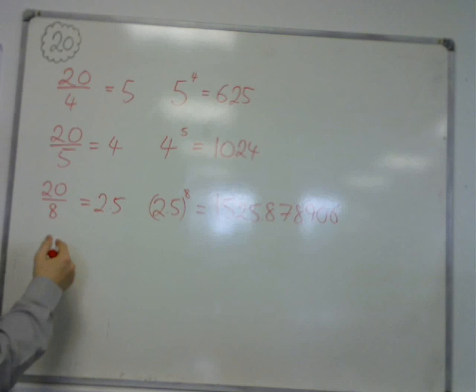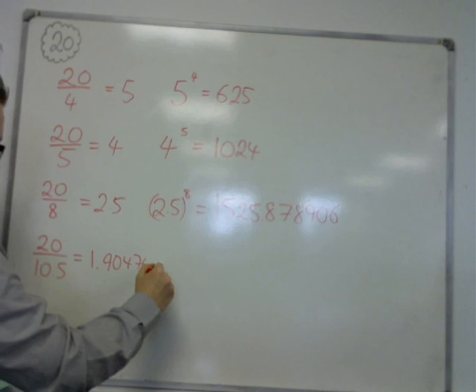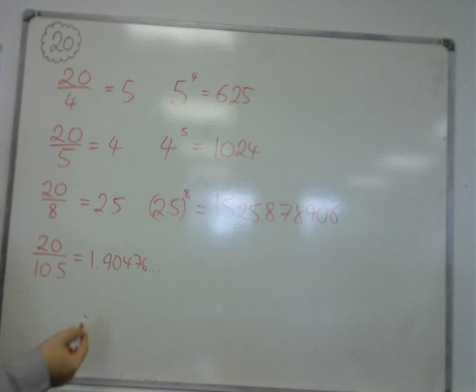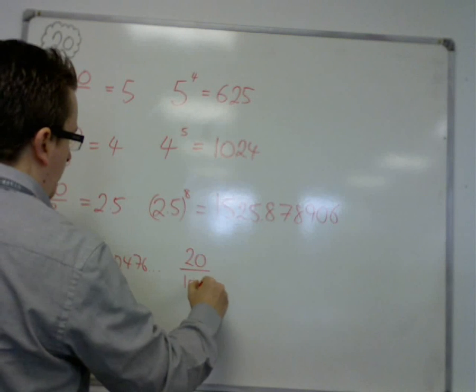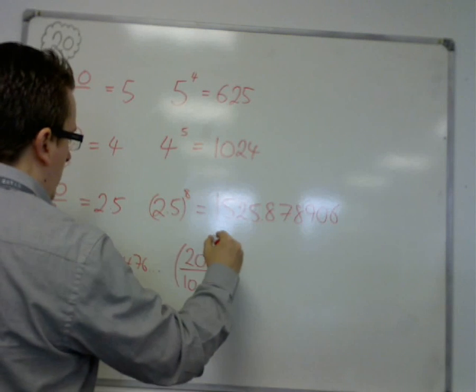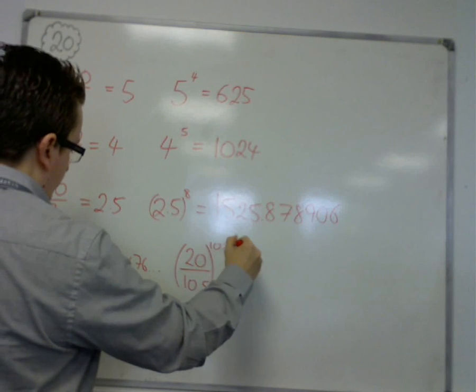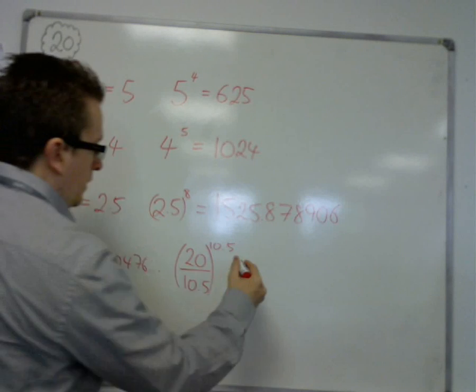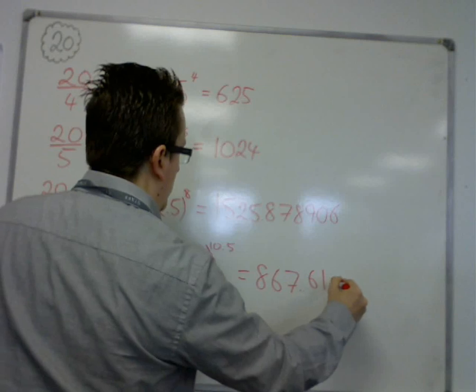Okay, let's try another one. Let's say, let's try 20 divided by 10.5, for example. Well, that's 1.90476 and so on when I actually put it in the calculator. So, we're going to do 20 over 10.5 to the power of 10.5, which is equal to 867.61 and so on.